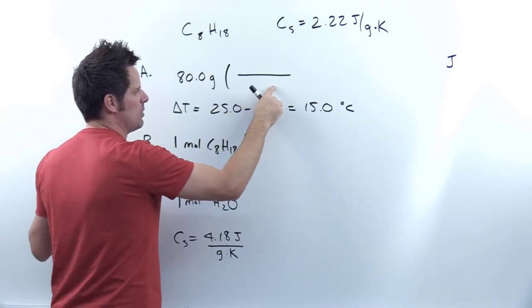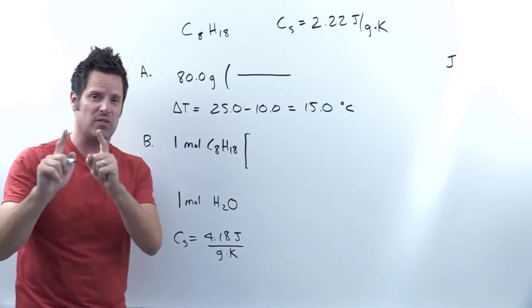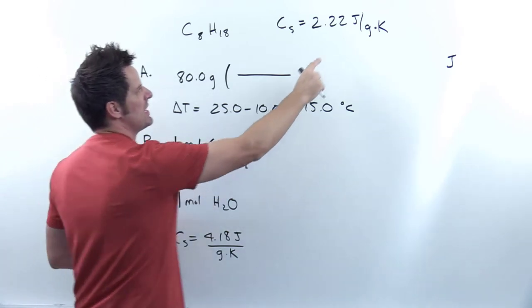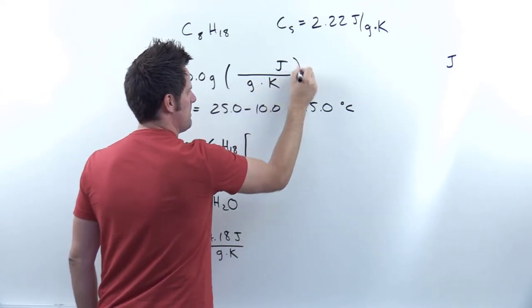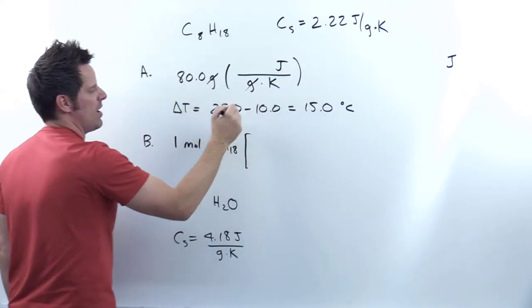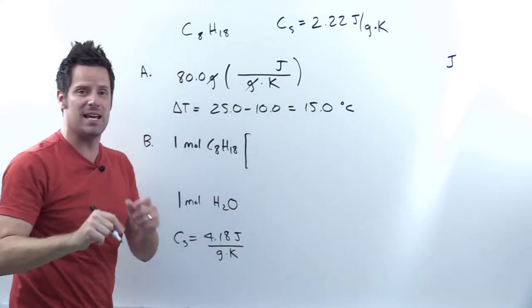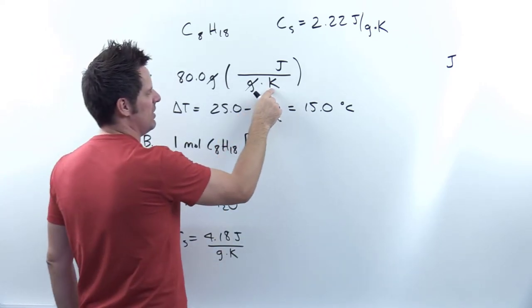I need something that has a denominator unit with grams in it. Have I been given that specific to octane? Yes, I have. I've been given this specific heat of joules per grams times kelvins, right? So the grams cancel each other out. I'm not quite to joules, but I'm getting there. I need to do something to cancel out these kelvins.